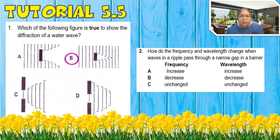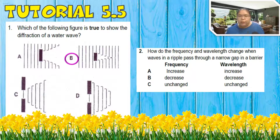Number two: how does the frequency and wavelength change when the wave in the ripple tank passes through a narrow gap? The frequency should be unchanged, and the wavelength also unchanged. So the answer is C.